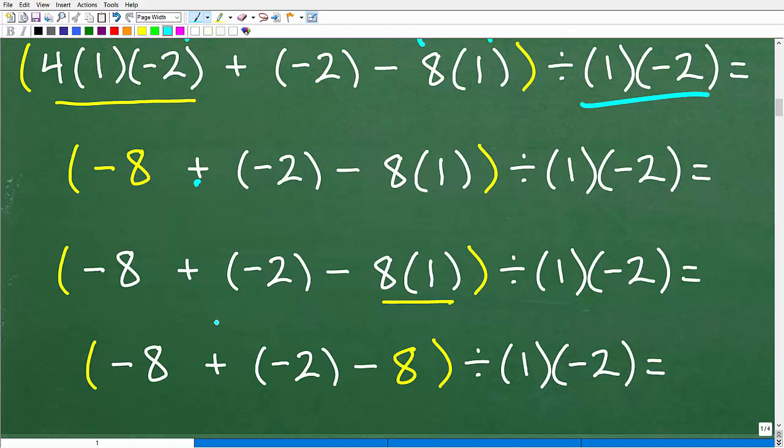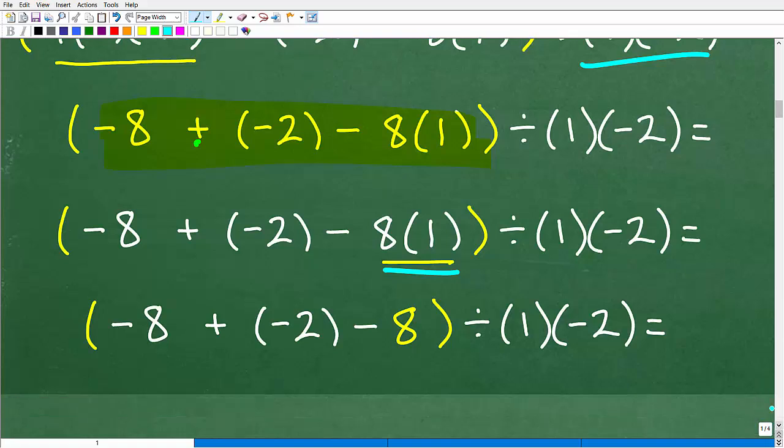So here is our first step. So now we can go ahead and handle this again. We have to focus on what is inside of the parentheses first. In other words, we've got to do all this work until we get this down to one value. All right, so we have negative eight plus negative two minus eight times one and eight times one of course is eight. And we're not done yet, but we're getting there.